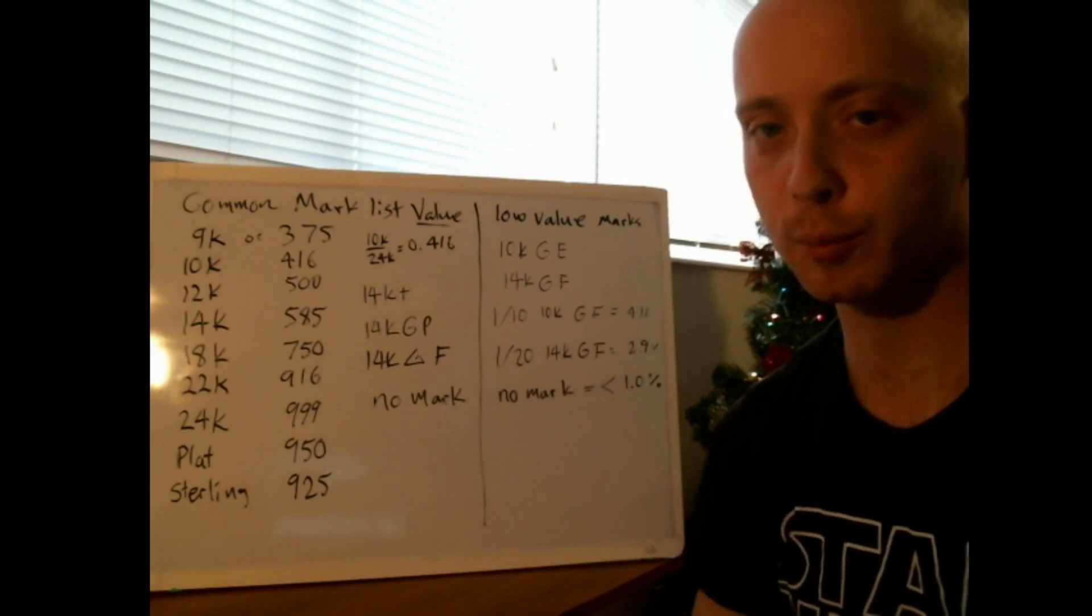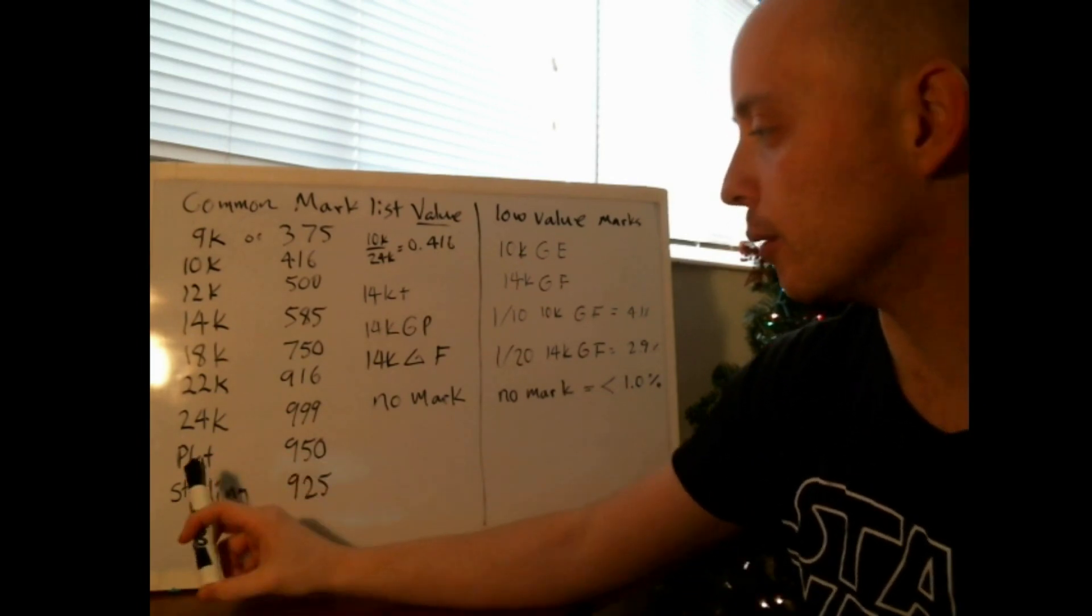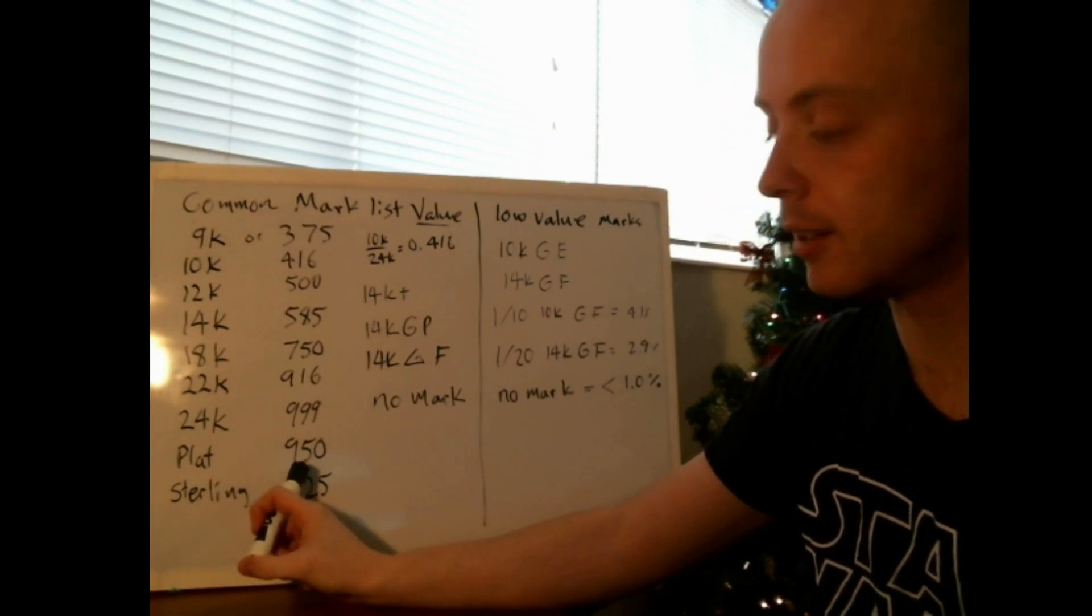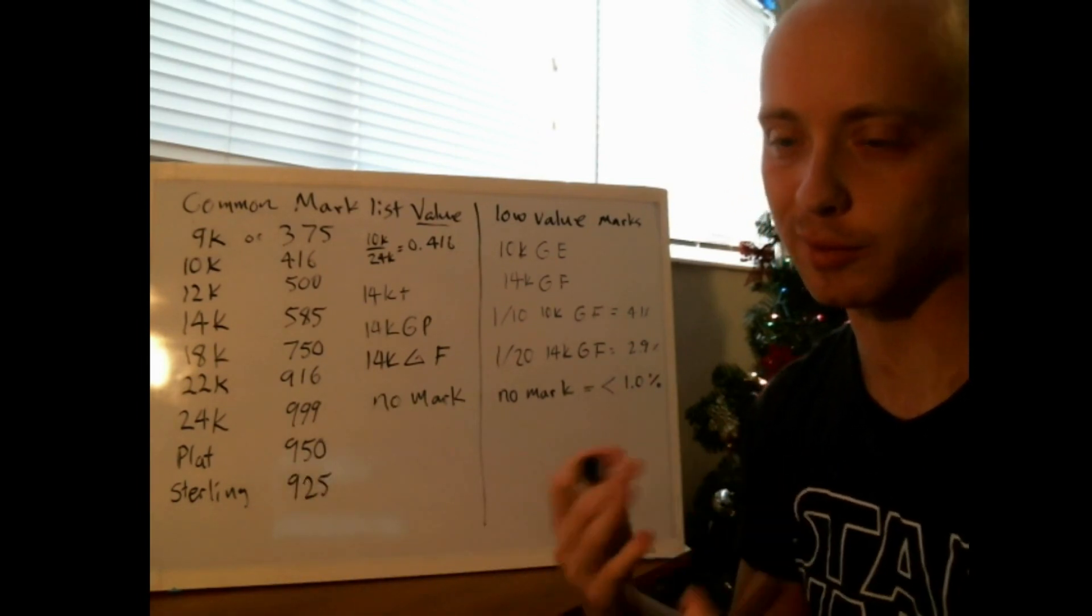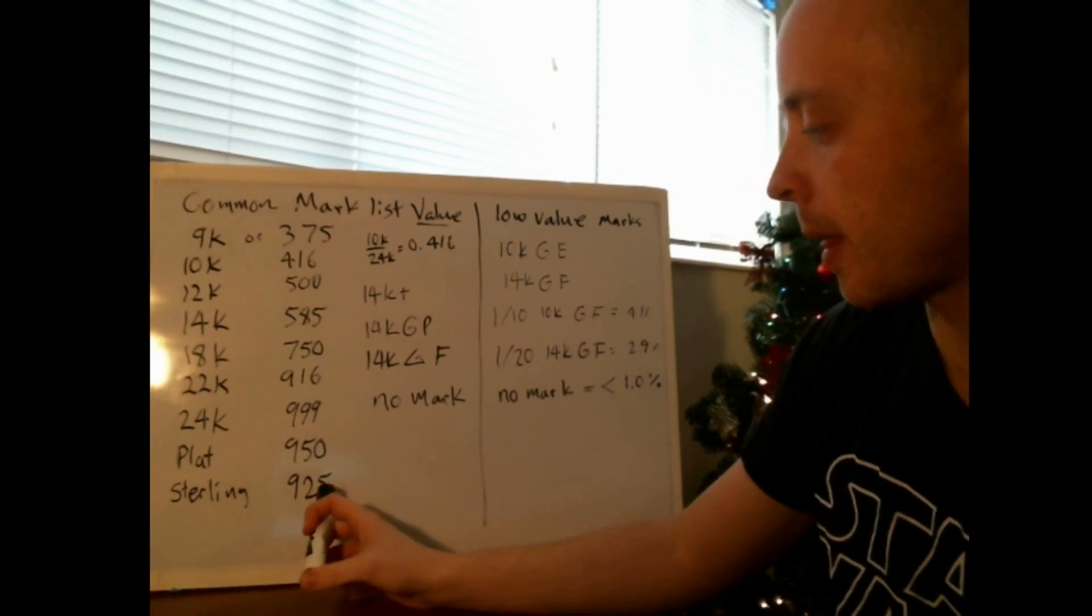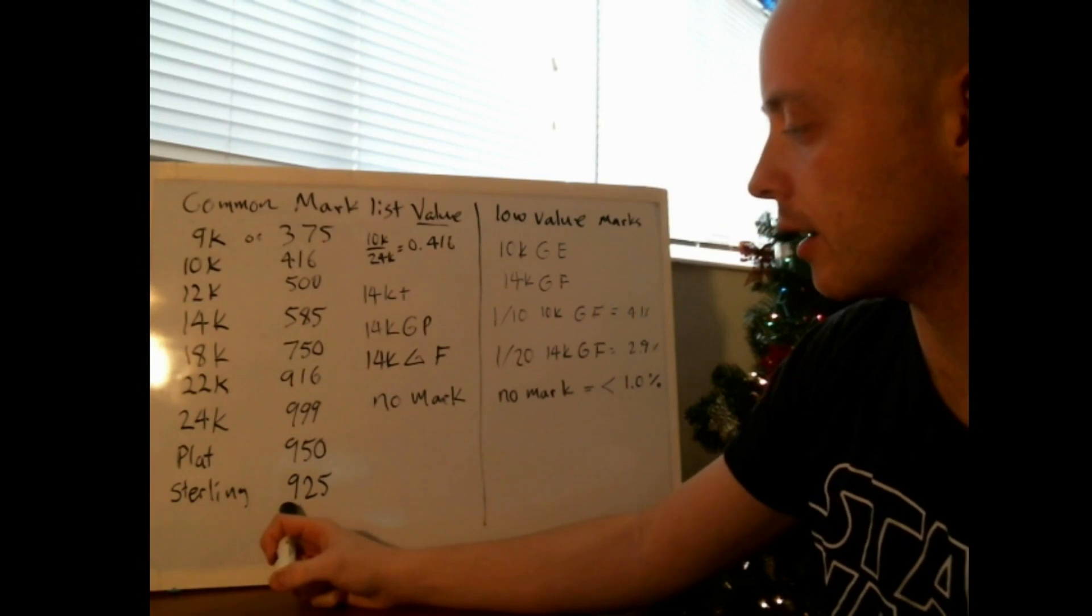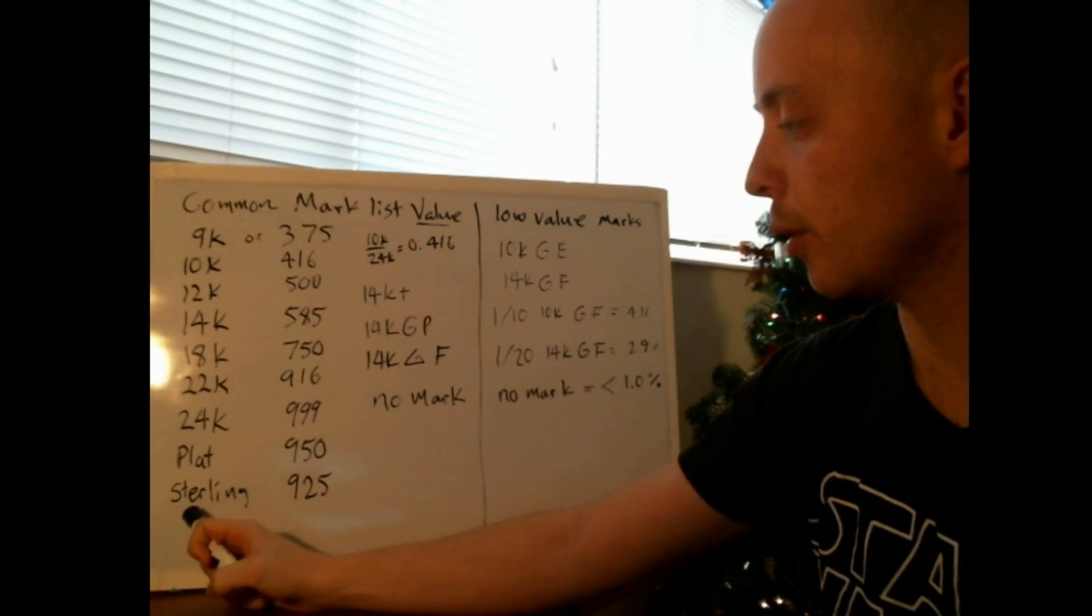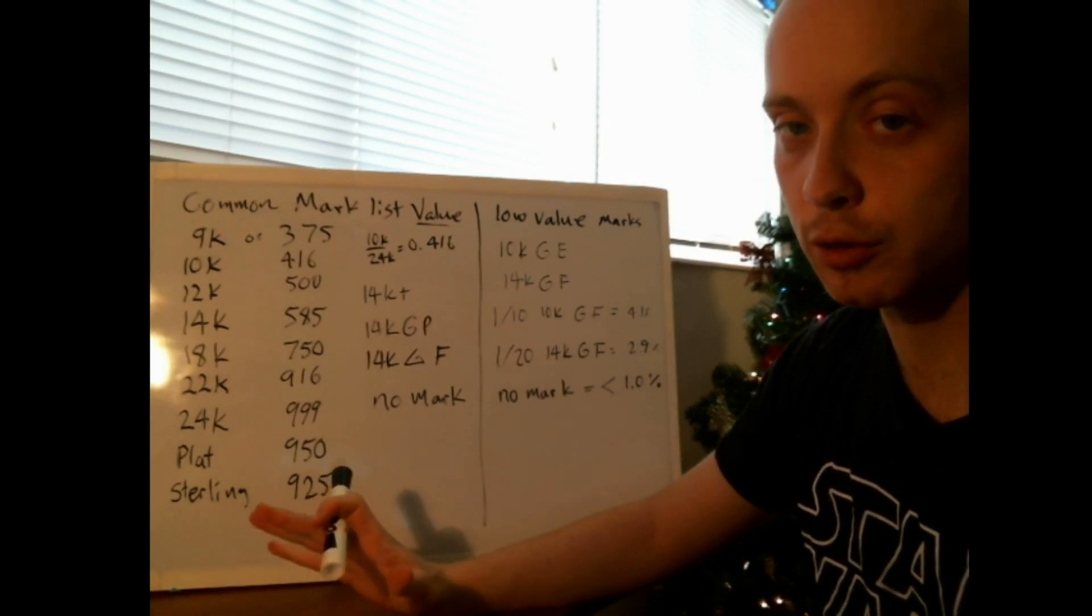Platinum tends to be marked 950, so again 95% platinum, and then it's got some iridium and some other things in there. Sterling or silver - for silver, usually you'll see one of these two marks: sterling or 925, which means 92.5 percent silver. Both of these marks mean the same thing, and they're both for silver jewelry.